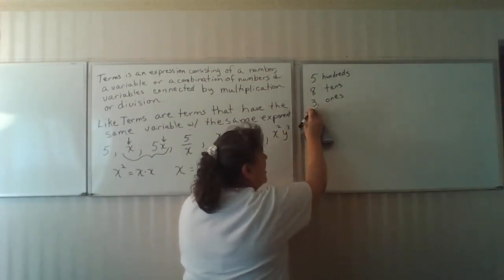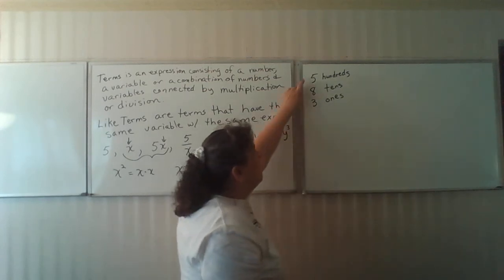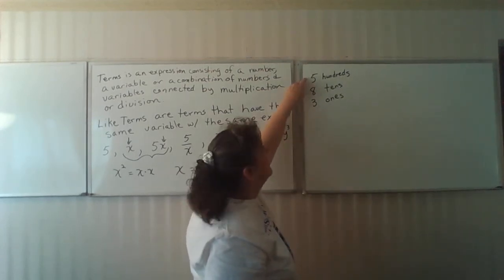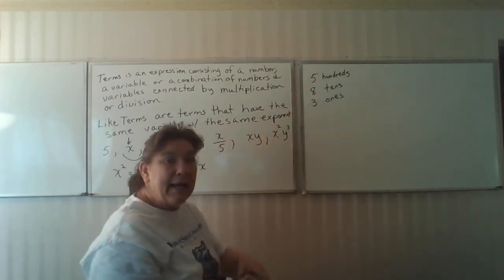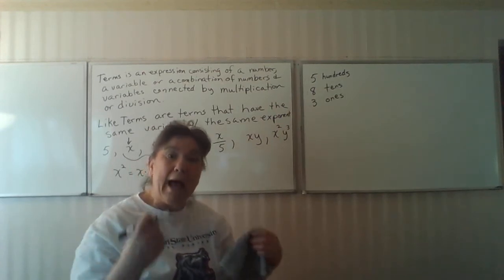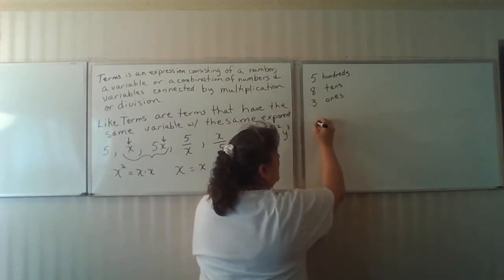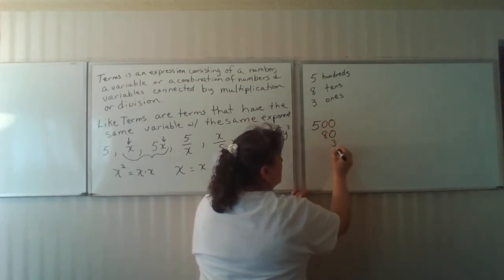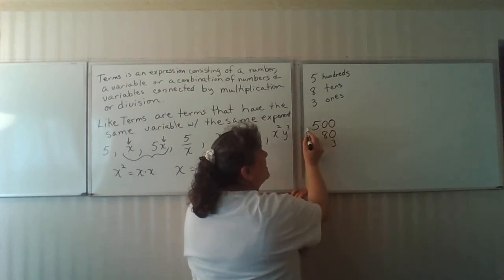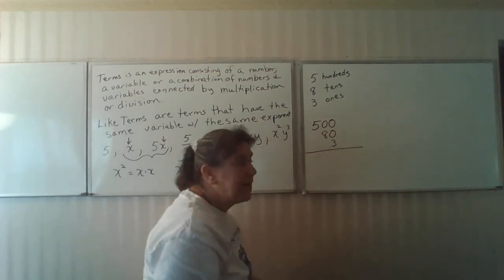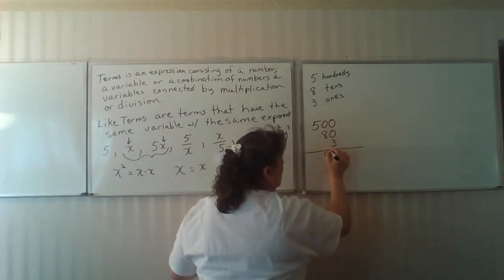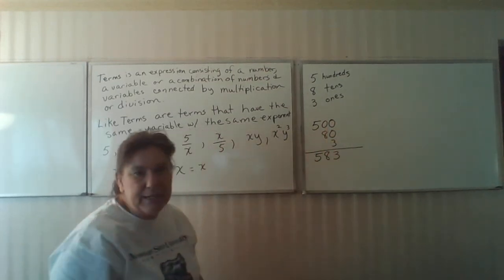The reason you could not do that is why five hundreds isn't the same place value as eight tens or three ones. In actuality, to add those, you actually had to write what it was: five hundred, eighty, and three ones. Now they're like terms, and so you can add them according to their place value, giving five hundred and eighty three.